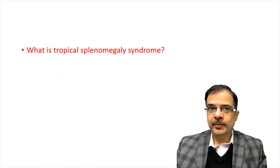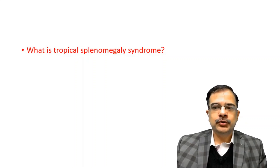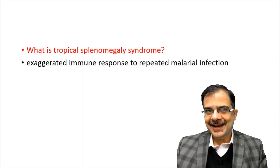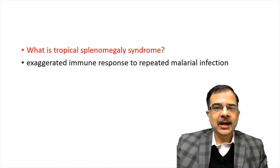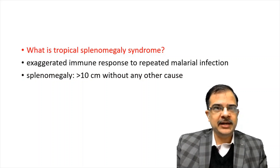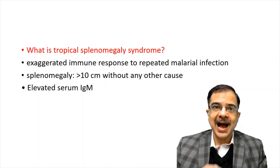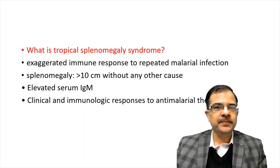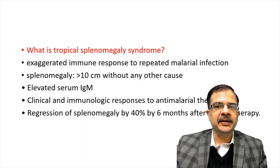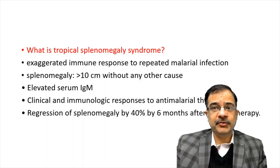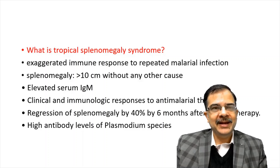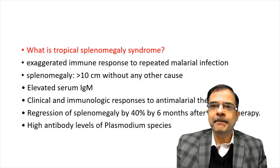What is tropical splenomegaly syndrome? Important from the Indian point of view. Tropical splenomegaly syndrome is basically an exaggerated immune response to repeated malarial infections, in which splenomegaly will be more than 10 centimeter in size — a major criteria. IgM levels are elevated. There is clinical and immunological response to anti-malarial therapy, and the splenomegaly regresses after six months of therapy by more than 40%. Antibody levels of Plasmodium species will be present.